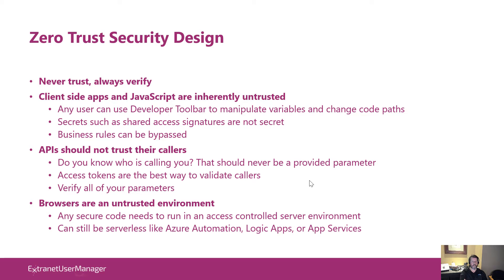Things like shared access signatures in Logic Apps are not secrets — you can see them under the hood, watch the network tab, and see what's going back and forth. You can bypass business rules. The trusted code that needs to run from a security point of view really shouldn't be running in the browser; it's got to be running in a backend API. And those APIs shouldn't trust their callers — they need to understand who's calling them from a verifiable process. Access tokens and OAuth OpenID Connect are great ways to do that.